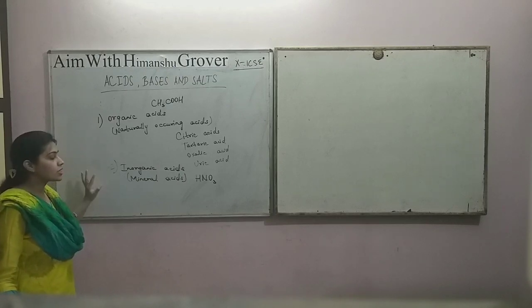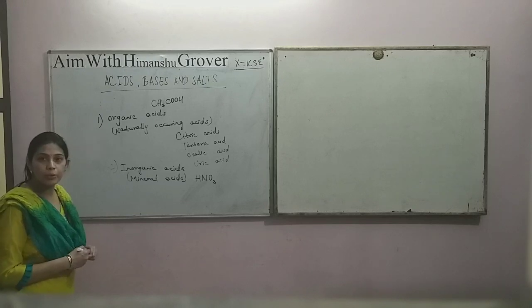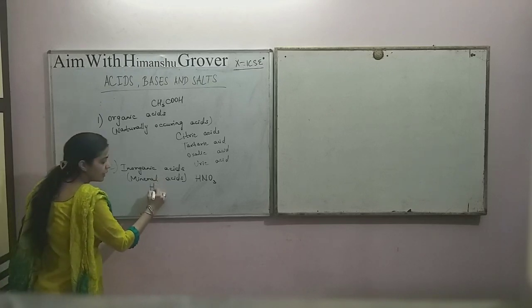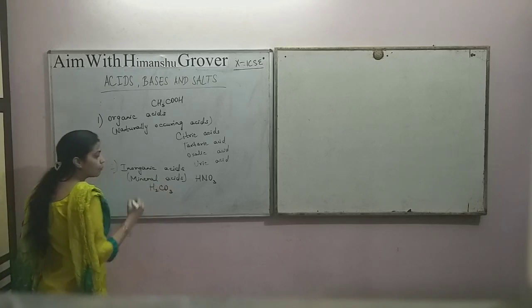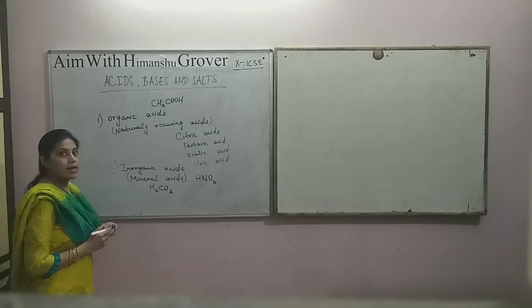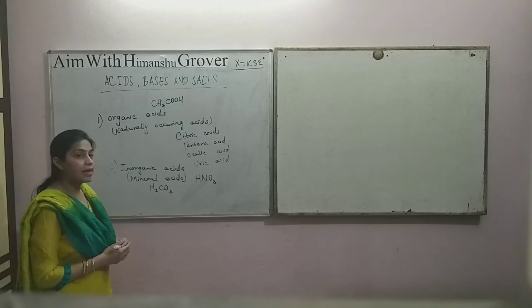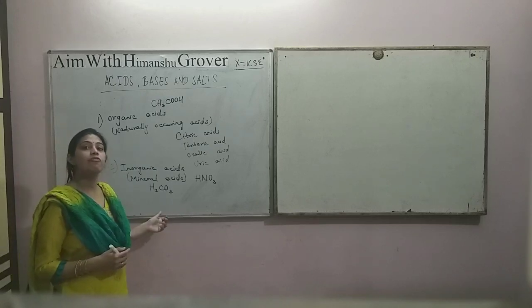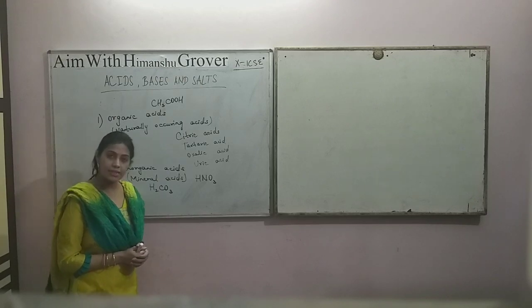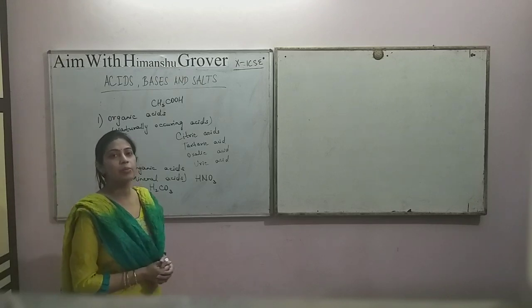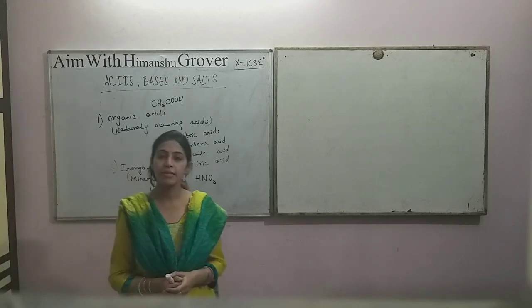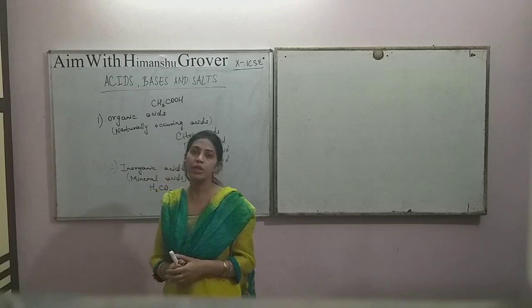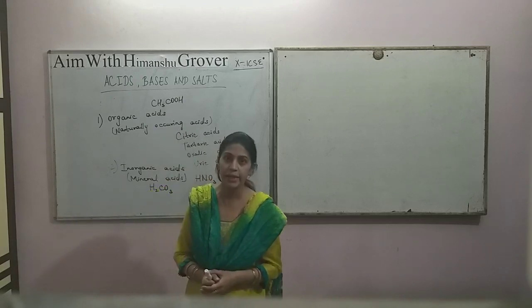But one exception here is carbonic acid, whose formula is H2CO3. Carbonic acid is also an inorganic acid, but it is a weak mineral acid. All other inorganic acids are strong in comparison to organic acids.